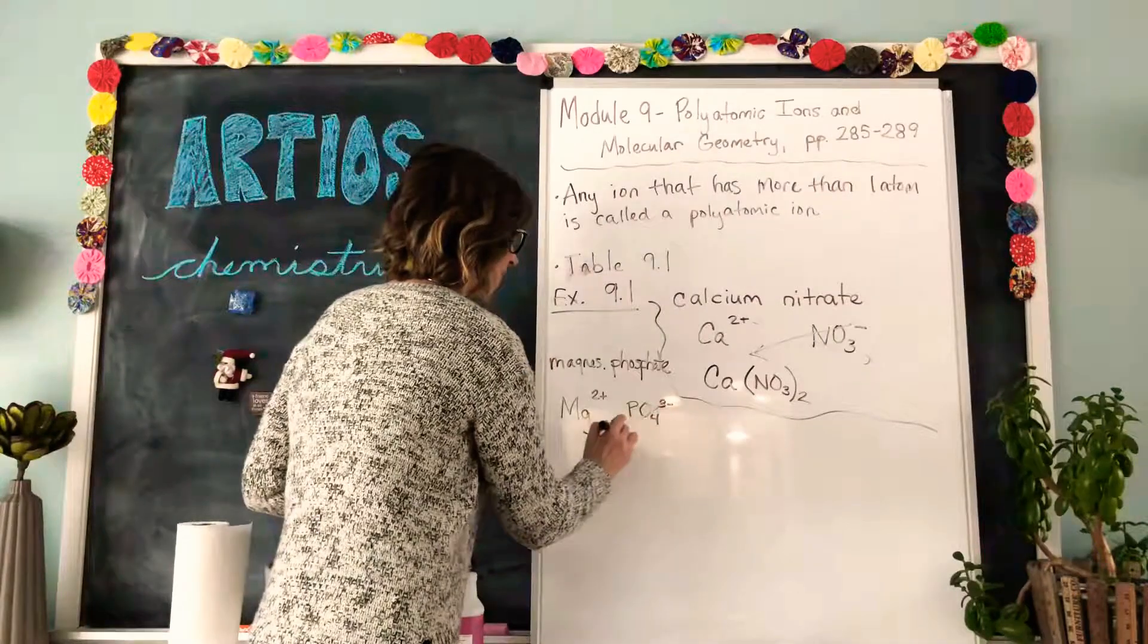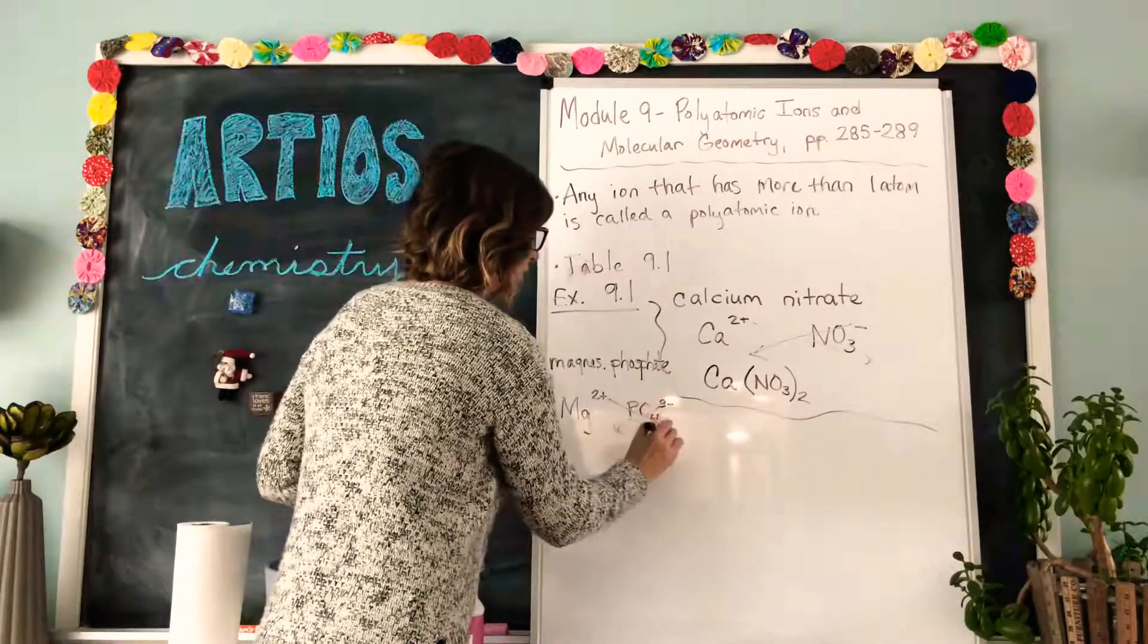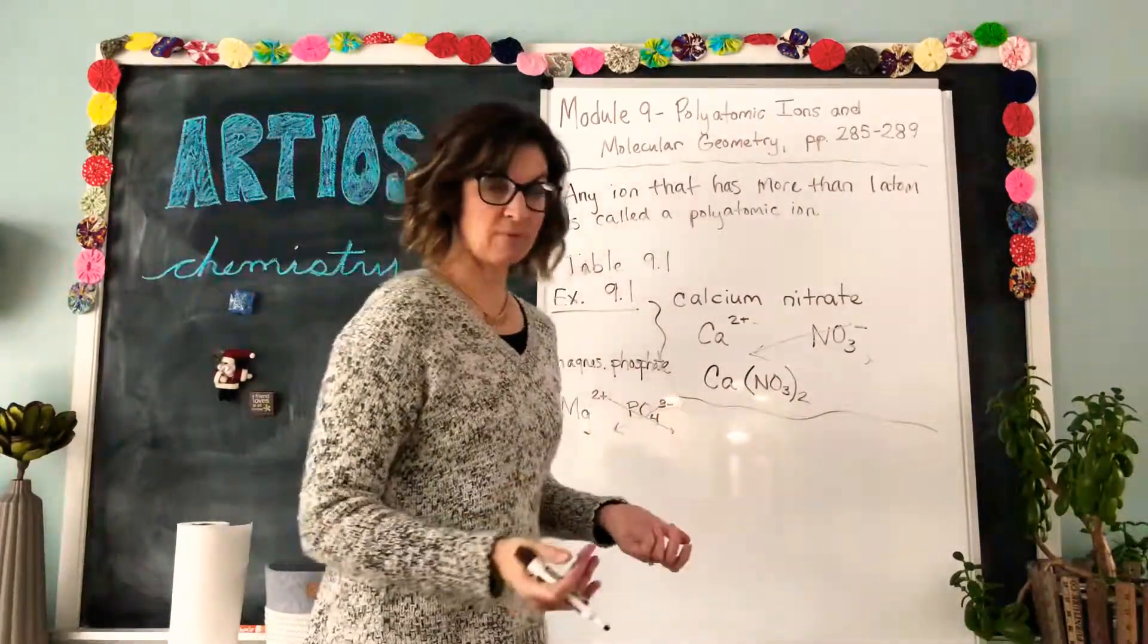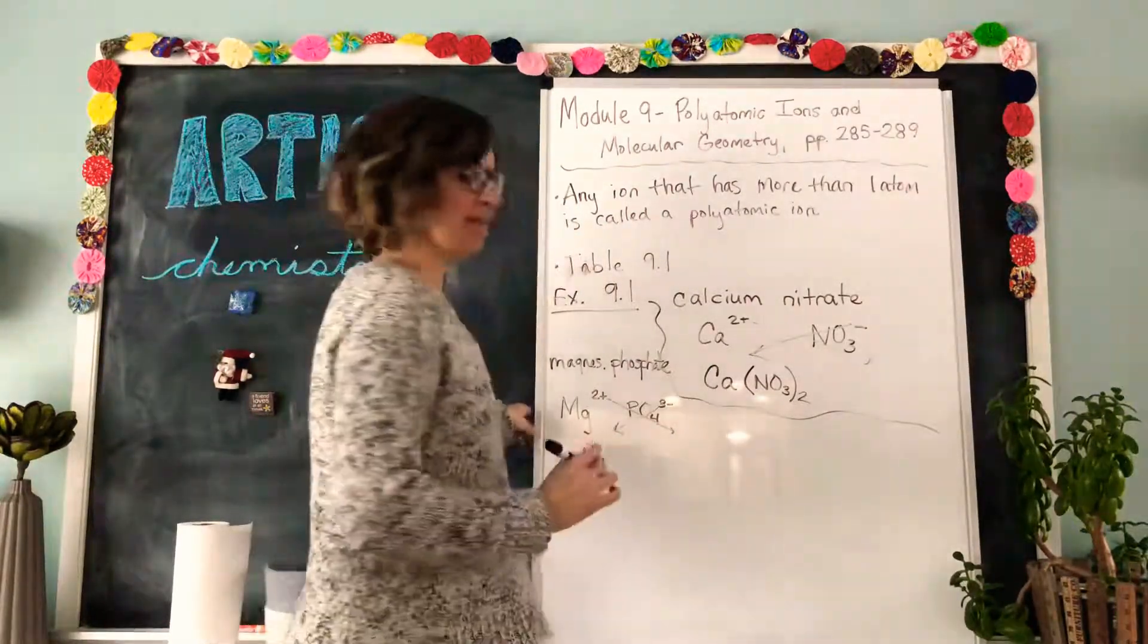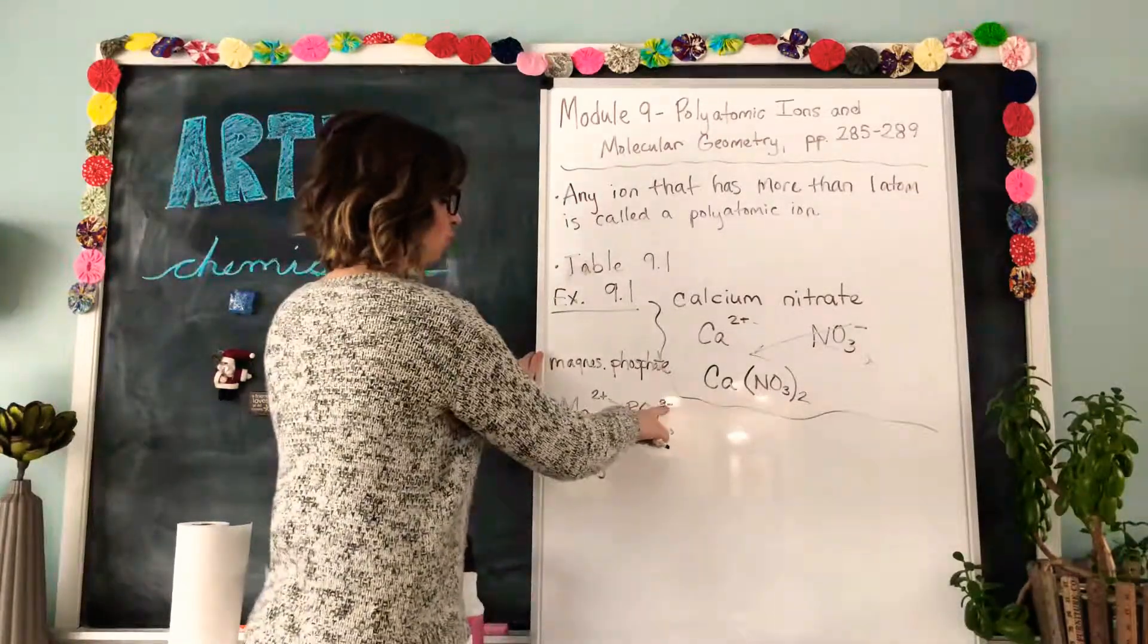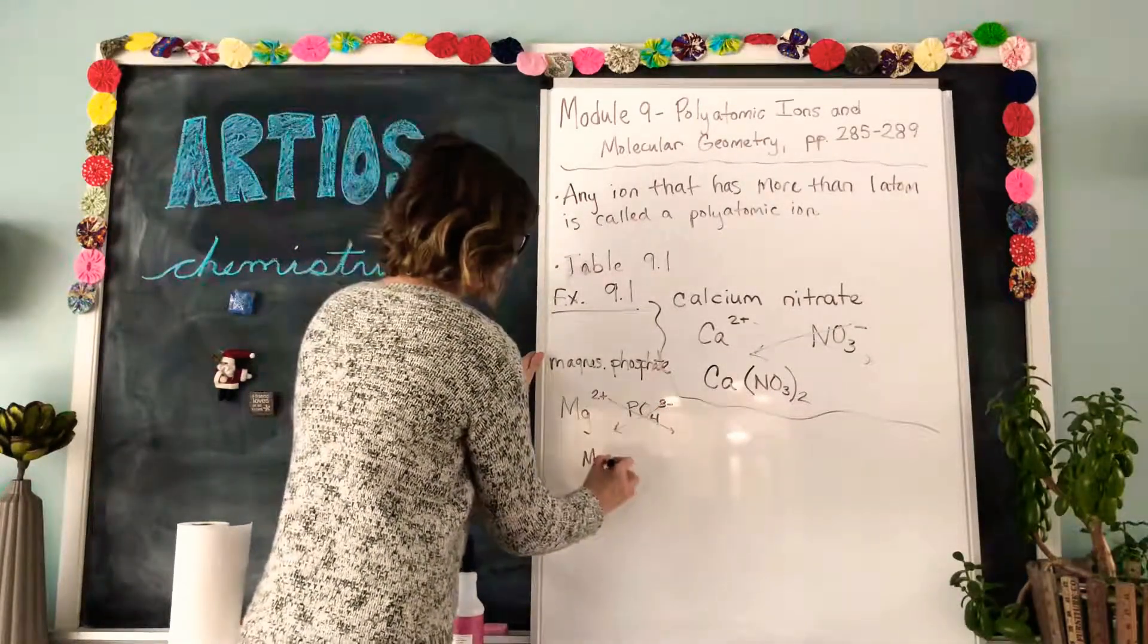Now we're going to flip-flop these two upper numbers, the numbers that represent the charges. So we have magnesium, how many magnesiums do we need? We bring this three over, so we need three magnesiums.